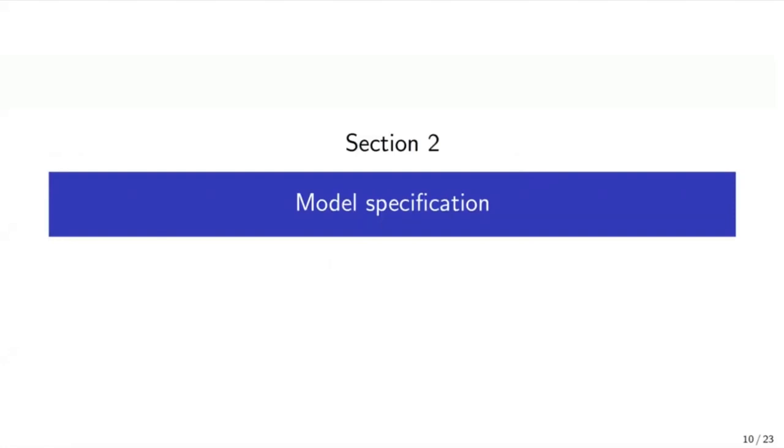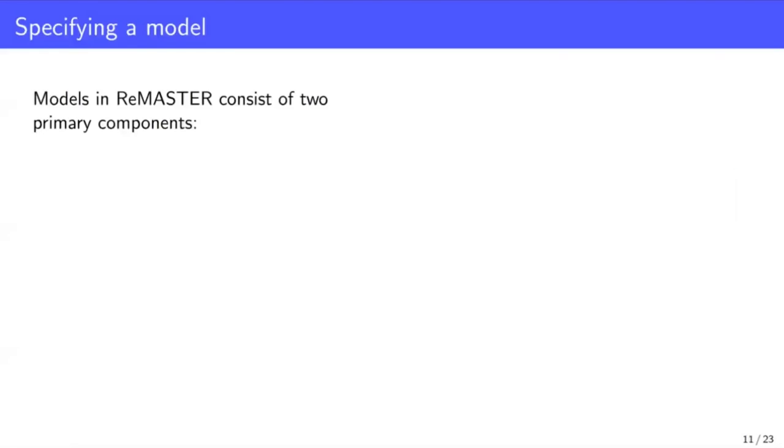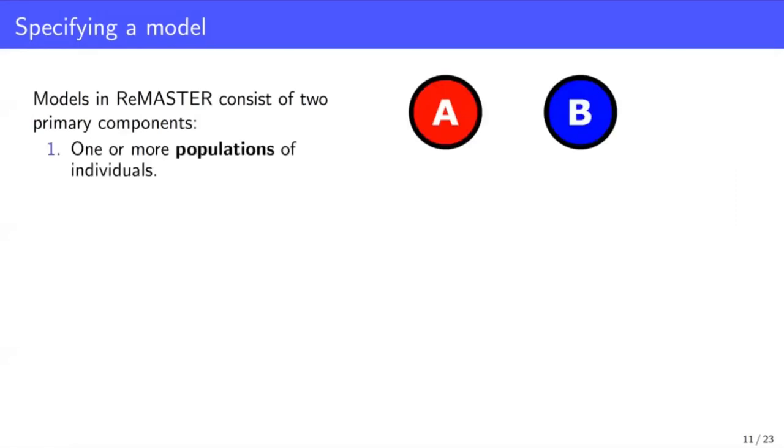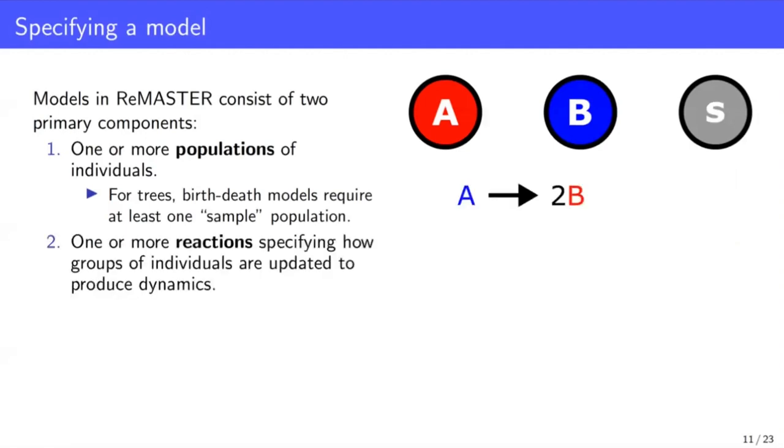Now we're going to dive into model specification, what a Remaster model actually represents. So models in Remaster consist of two primary components. Firstly, one or more populations of individuals. So here we have two populations of individuals labeled A and B. If you want to sample trees, you additionally need one more sample population. In addition to these populations, one needs to specify one or more reactions that indicate how groups of individuals are updated over the course of the dynamics to produce population trajectories and trees.